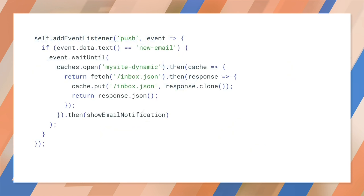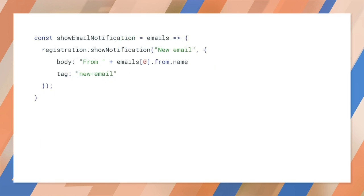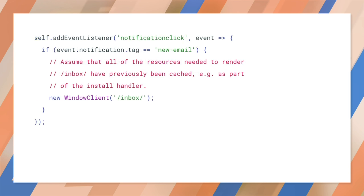Notice that the code here updates caches before showing a notification. The showEmailNotification function in the code sample uses the Notification API to display a notification. The notification click listener in the Service Worker could then display an email. Since the necessary resources were cached in response to the push event, the content should display regardless of network conditions.